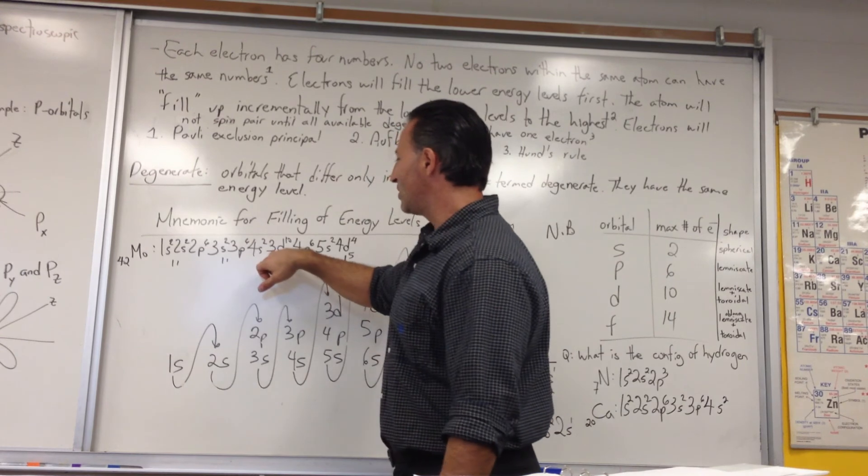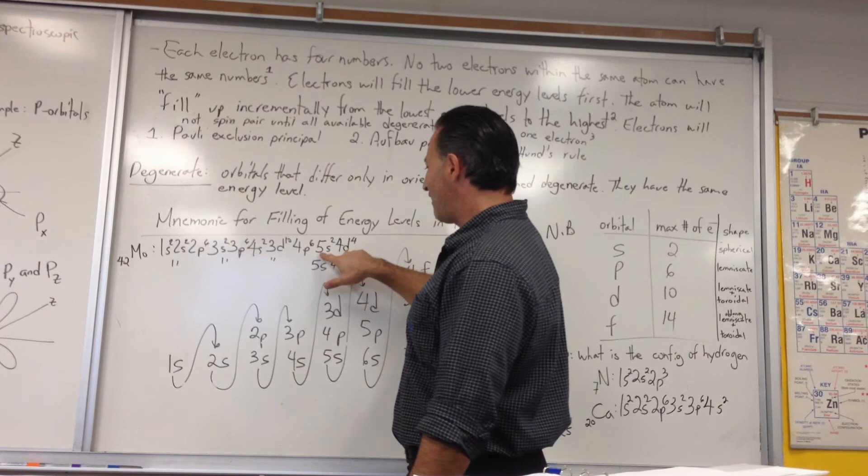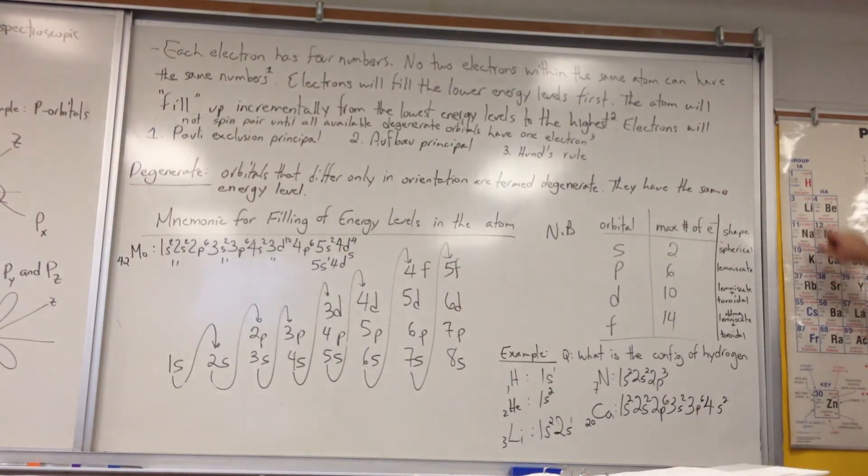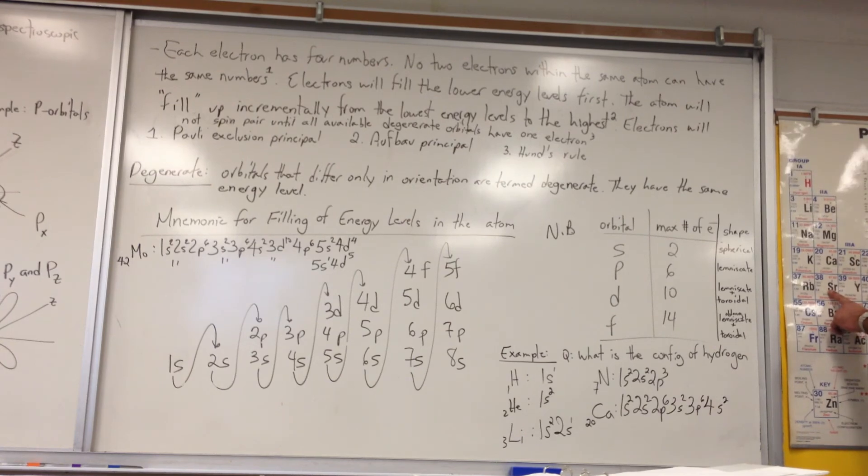So we keep on going. 3D10 traverses the whole D block. 4P6 traverses the P block. 5S2 brings us down to strontium. Okay, now molybdenum is four more away.